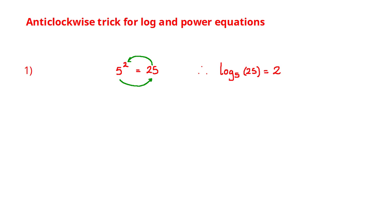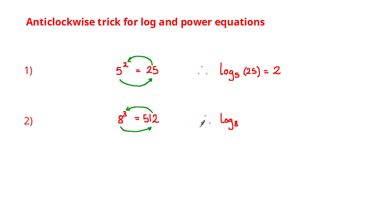Let's have a look at another example. Here we have 8 cubed is equal to 512. The base in this case is 8, so going anti-clockwise we get log base 8 of 512 is equal to 3.